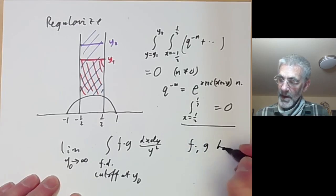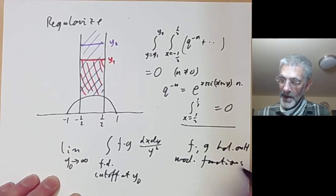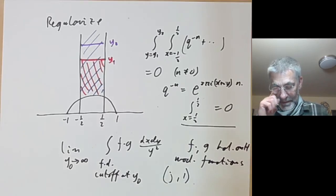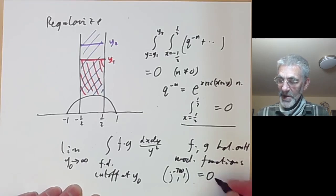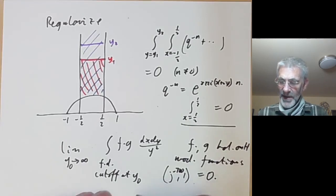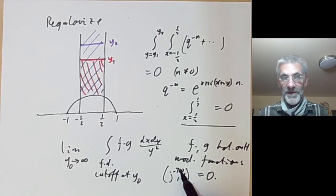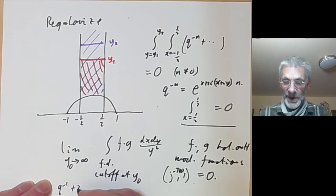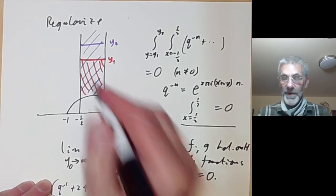Here f and g are holomorphic on H and may have poles at i∞. For example, if you take j − 720 and compute its inner product with 1, this is actually equal to zero. This is why the natural constant term for the elliptic modular function is not 744 as given for historical reasons, but rather 24 — because that makes the function q^{-1} + 24 + 196884q + ... orthogonal to 1 under this inner product.